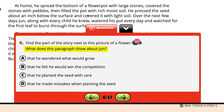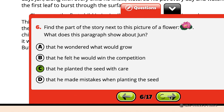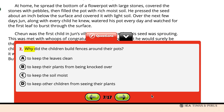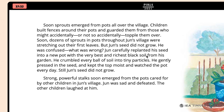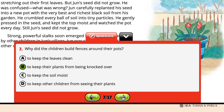Students need to advance the page to answer Question 7: Why did the children build fences around their pots? They can drop the question down to read the entire page, then click on Option B: to keep their plants from being knocked over. Question 8 asks what was the first thing Jun did when his seed did not grow. Option D provides the correct answer: He replanted his seed in a new pot.